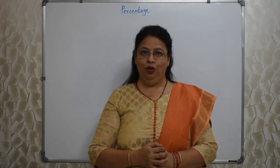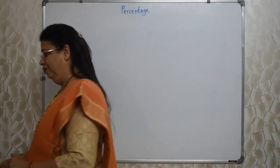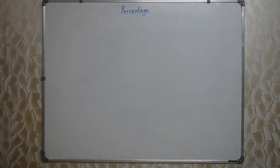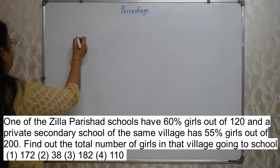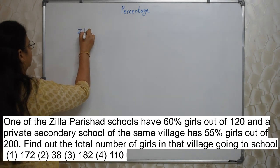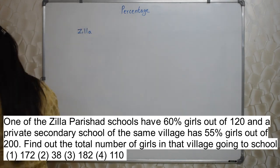First sum will appear on your screen. One of the Jila Parishat schools have 60% girls out of 120 and private secondary school of the same village has 55% girls out of 200. There are two schools — Jila Parishat and private.